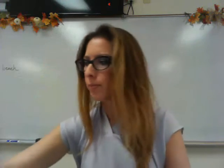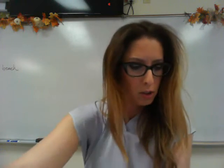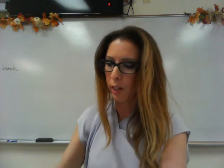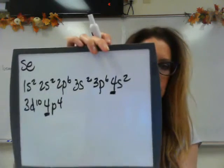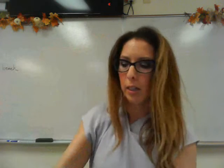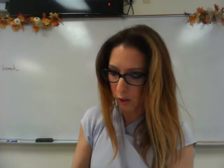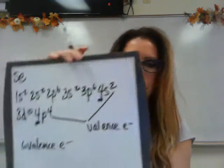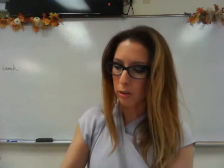Student exercise number 10 asks for the valence and core electrons for selenium (Se). The electron configuration is 1s2, 2s2, 2p6, 3s2, 3p6, 4s2, 3d10, 4p4. I underline the highest number, which is 4, in front of the s and the p. Adding the 2 and the 4 gives me 6 valence electrons. The electrons in all the other sublevels are my core electrons.